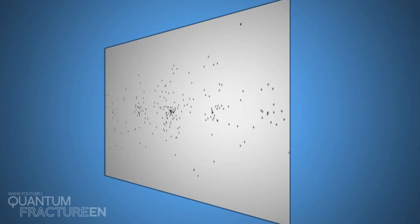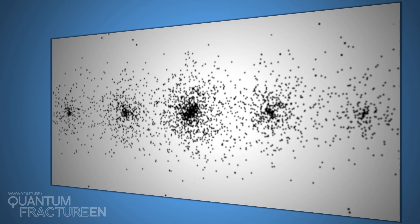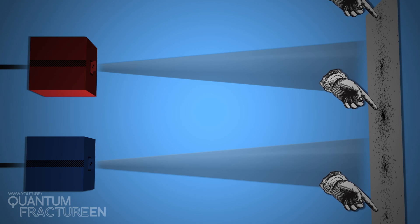If we repeat the simultaneous opening of the two box flaps, we find this curious pattern. The question practically asks itself, why, instead of hitting the area directly in front of the boxes, do the atoms cluster in these zones? It makes no sense.